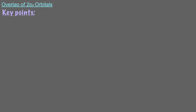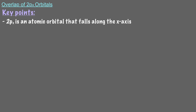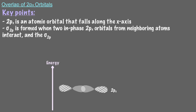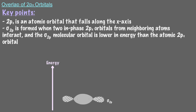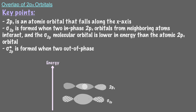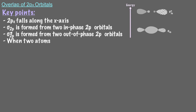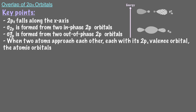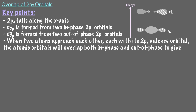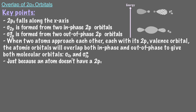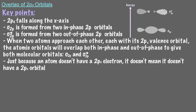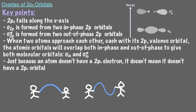Let's review a few key points from this video. 2px is an atomic orbital that falls along the x-axis. Sigma 2p is formed when two in-phase 2px orbitals from neighboring atoms interact, and it is lower in energy than the atomic 2px orbital. Sigma star 2p is formed when two out-of-phase 2px orbitals interact, and it is higher in energy than the 2px atomic orbitals. When two atoms approach each other with 2px valence orbitals, the atomic orbitals overlap both in-phase and out-of-phase to give both molecular orbitals. Finally, just because an atom doesn't have a 2px electron doesn't mean it doesn't have a 2px orbital — orbitals represent the possible wave energies, shapes, and orientations that electrons can be.